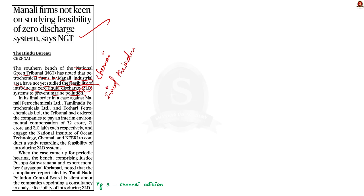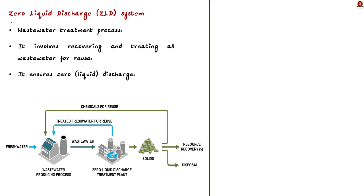In this news article discussion today, let us focus on the zero liquid discharge (ZLD) system. Zero liquid discharge or ZLD is an advanced water treatment process. The process involves recovering and treating all wastewater for reuse and, as the name indicates, the process ensures zero liquid discharge at the end of the treatment cycle. In simple words, this process ensures that no liquid effluent is released into the environment.